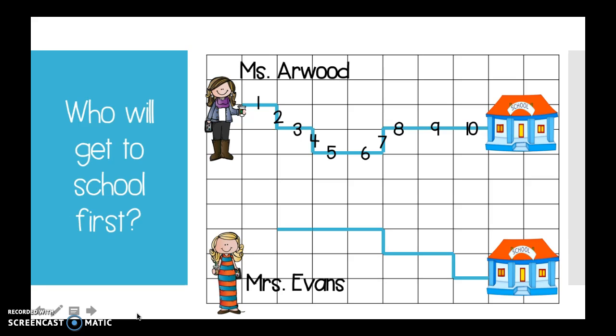All right. Do you know how long it took Mrs. Evans to get to school? Let's count and see. One, two, three, four, five, six, seven, eight. Oh, that lucky duck. She only has to go eight blocks. So, who is going to get to school first? Me having to go ten or Mrs. Evans having to go eight? You're right. Mrs. Evans is for sure going to get there first.